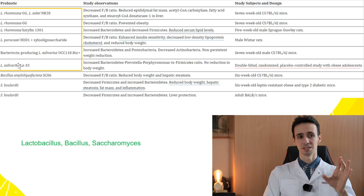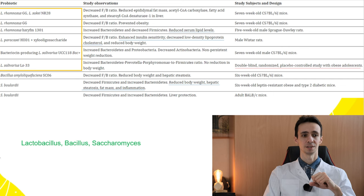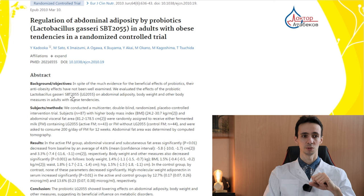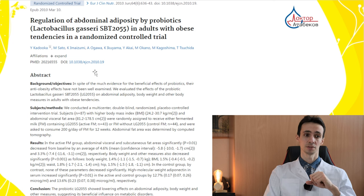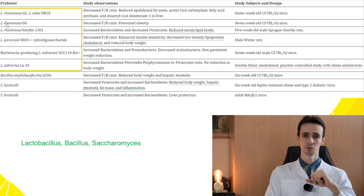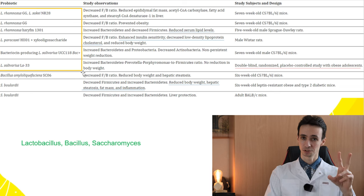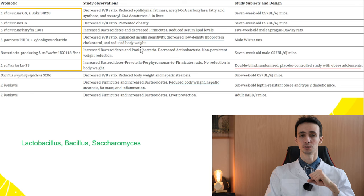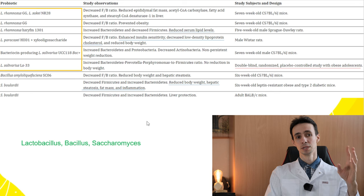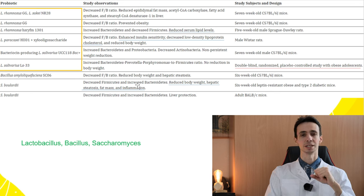Although in one study these bacteria did not really help to decrease weight in obese adolescents, there are other studies that showed that probiotics — you can see the names here and Google them if you are searching for a probiotic to buy — really help to decrease fat deposition in humans. However, some Lactobacilli or Bifidobacteria can vice versa decrease Bacteroidetes and increase Firmicutes, leading to weight gain. For example, Lactobacillus reuteri may help to increase appetite, weight, and immunity.